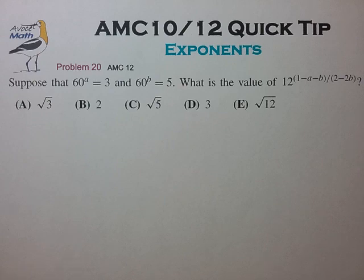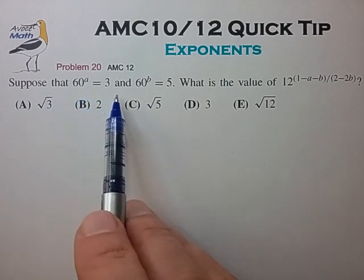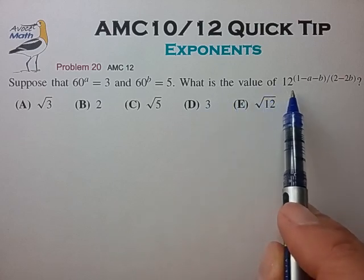So let's take a look at our example problem. Suppose that 60^a = 3 and 60^b = 5. What is the value of this expression?